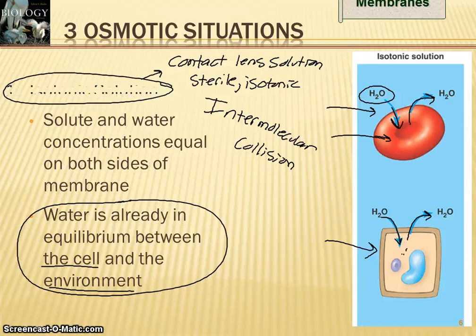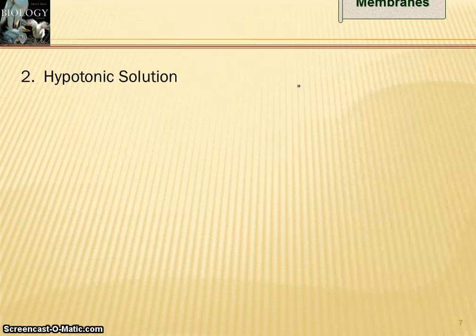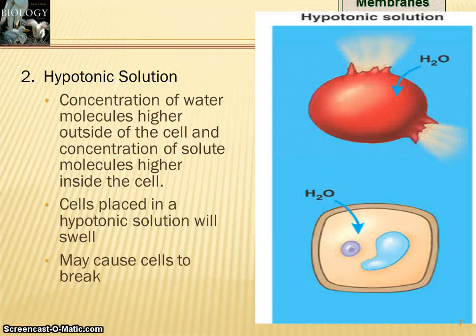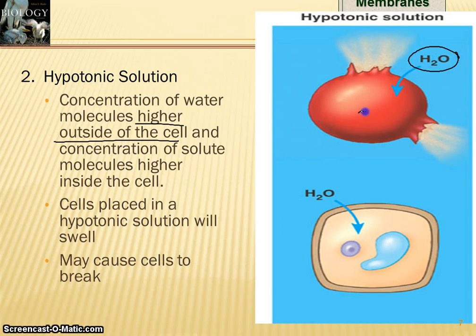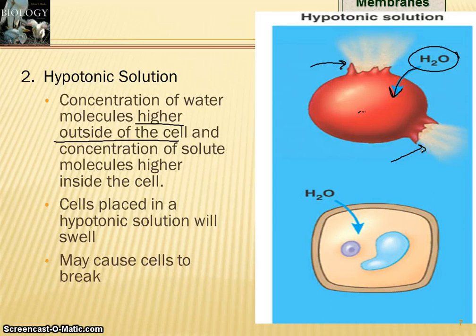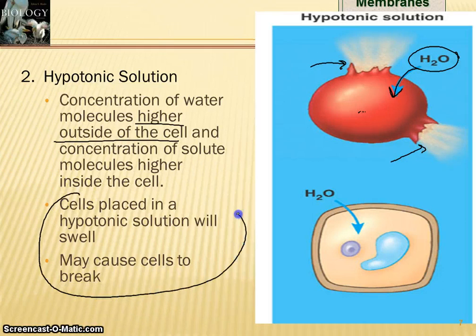Another way cells do osmosis with their environment is called a hypotonic solution. In a hypotonic solution, the concentration of water molecules is higher outside the cell, and that means it's lower inside the cell. Because the water concentration is higher outside, it wants to reach equilibrium with the inside of the cell. So by intermolecular movement, water molecules are going to get bumped inside the cell until they reach equilibrium. It's almost like leaving a water balloon on the hose too long — it's going to swell and swell. The cells could eventually burst, because the cell membrane can only stretch so much before it ruptures. Cells in a hypotonic solution can swell and break.